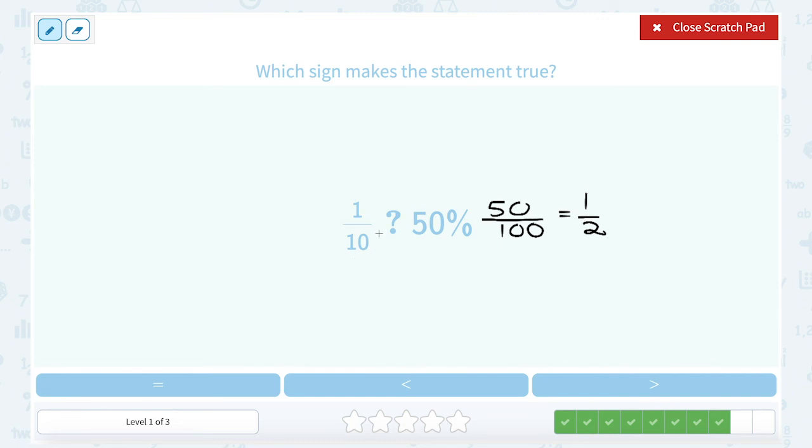If I want to write half out of 10, that would be 5 out of 10. Right? I could take both of these numbers and multiply them by 5. So which is bigger, 1 out of 10 or 5 out of 10? Well, 1 out of 10 would be smaller or less than 5 out of 10 or 50%.